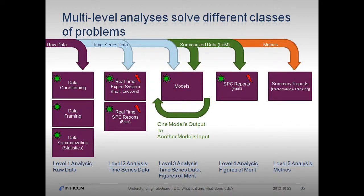FabGuard performs analyses at multiple levels and timescales to detect as many different types of faults as possible. The first level conditions, frames, or summarizes raw data streams. Once conditioned, data is sent to level 2 analyses — FabGuard's real-time expert system or real-time SPC reporting. Summarized data are referred to as figures of merit, or FOMs. Both conditioned time series data and summarized data can be sent to level 3 analyses executed run-by-run, and these level 3 models can be chained together so the output of one model feeds the input of another. At level 4, only figures of merit are used for SPC reports. Finally, at level 5, metrics calculated from FOMs are used for summary reporting and performance tracking.